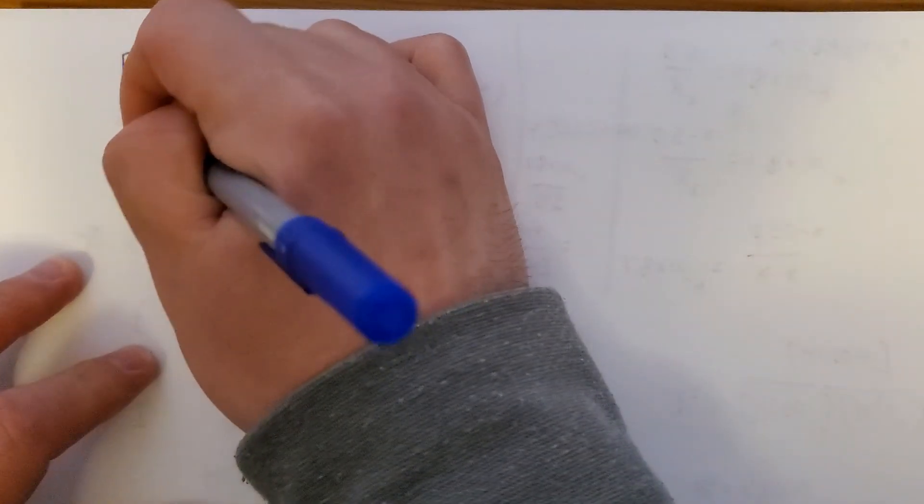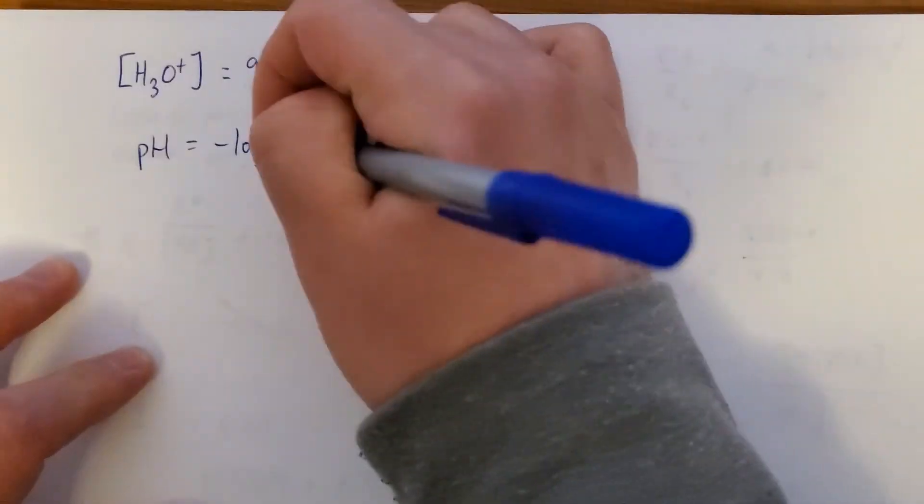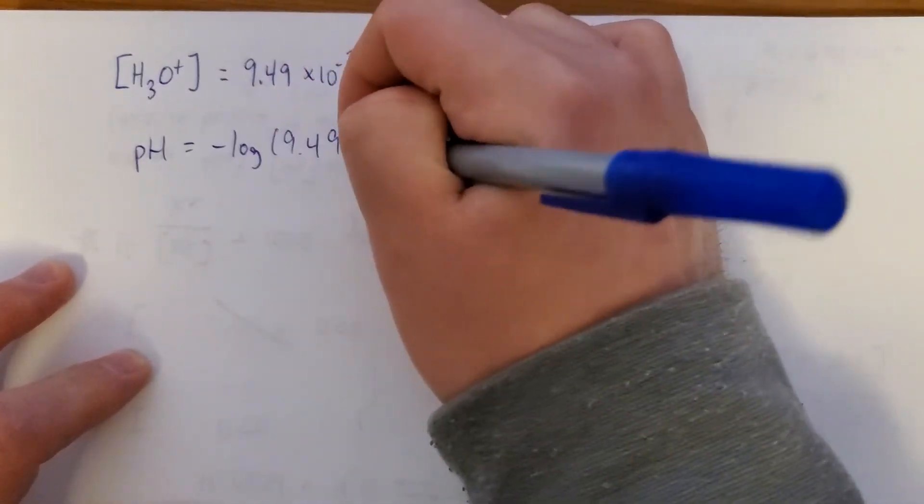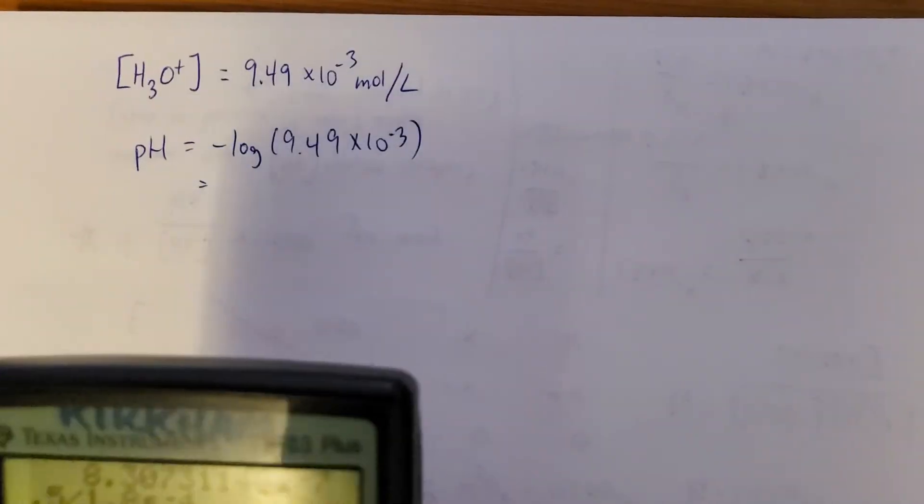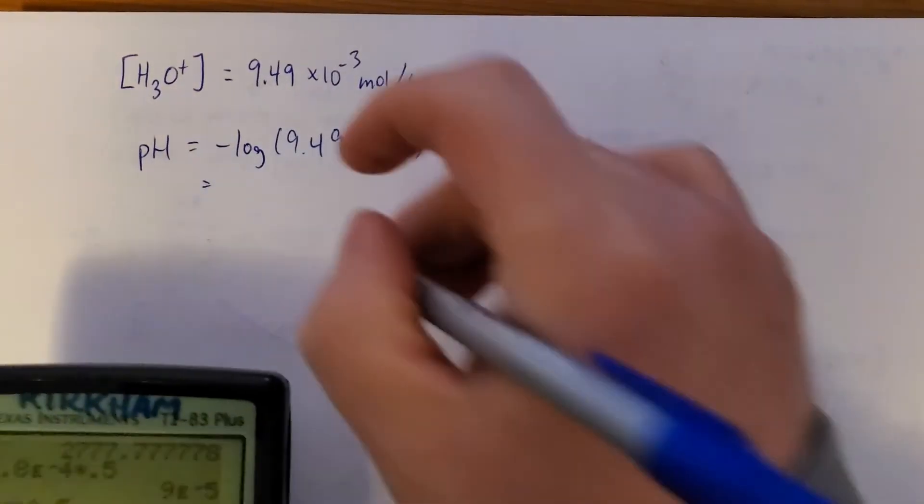So, here's the H3O+ concentration. pH is no big deal. We'll just do negative log of that. Okay. I get 2.02.